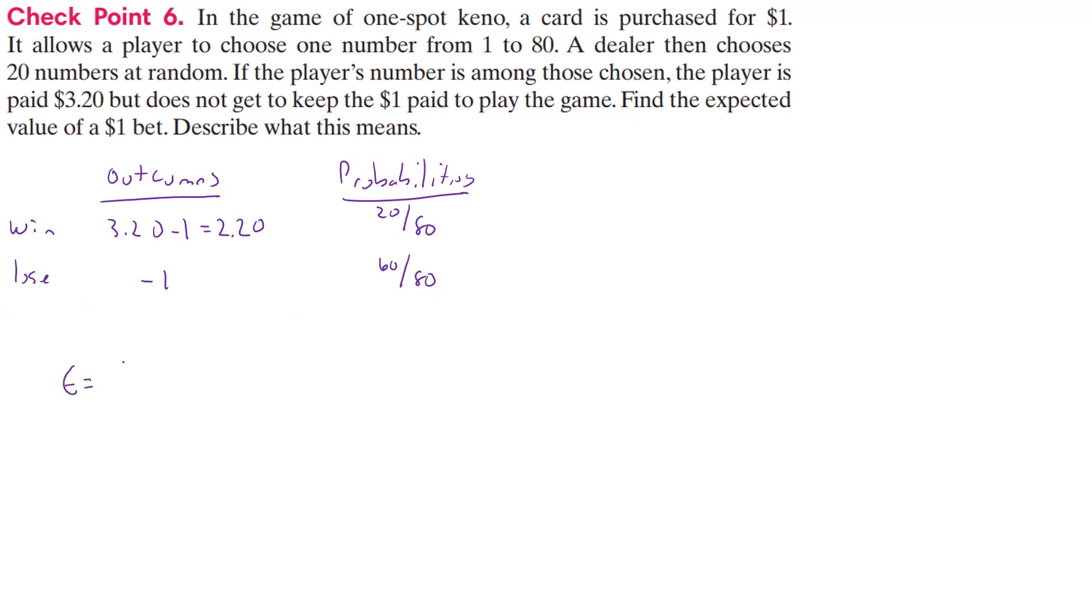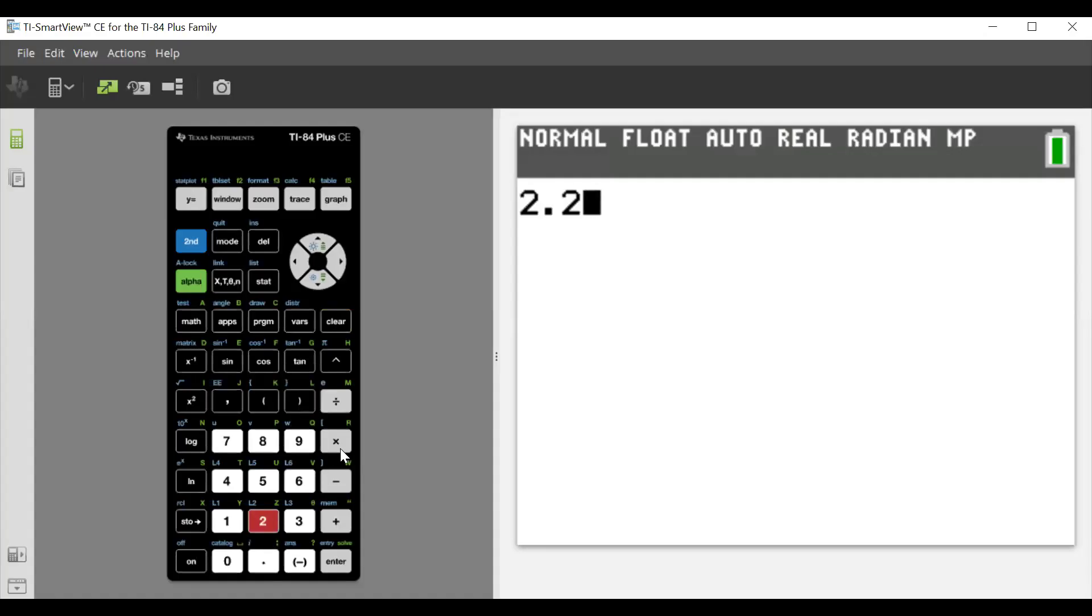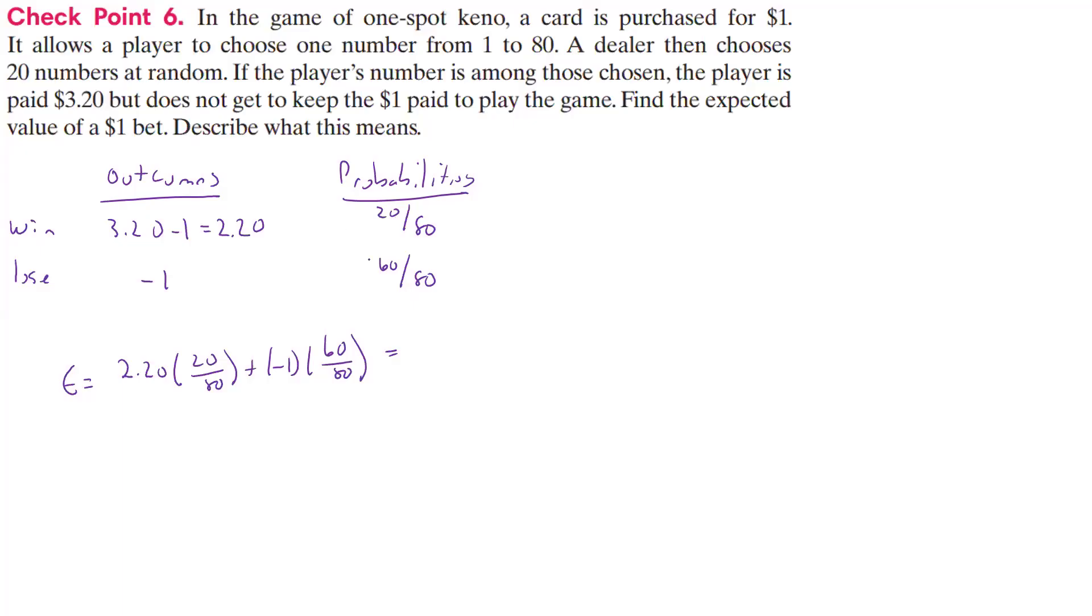So what is our expected value? Well, that's going to be 2.20 times 20 over 80 plus a negative 1 times 60 over 80, and if we plug that into our calculator, alright, so let's clear that out. So we have 2.2 times 20 divided by 80 plus, we had a negative 1 times 60 divided by 80. Now, you know, if we're doing money, let's just do it. So it's a negative 20 cents, it looks like. So we don't care if it's a fraction in this case because we know it's going to be money, and so it's going to be minus 0.20.